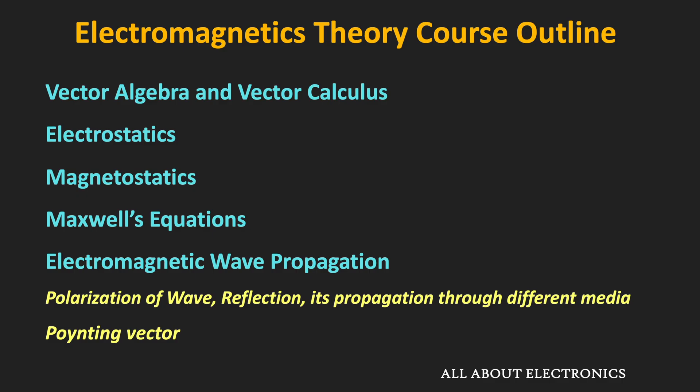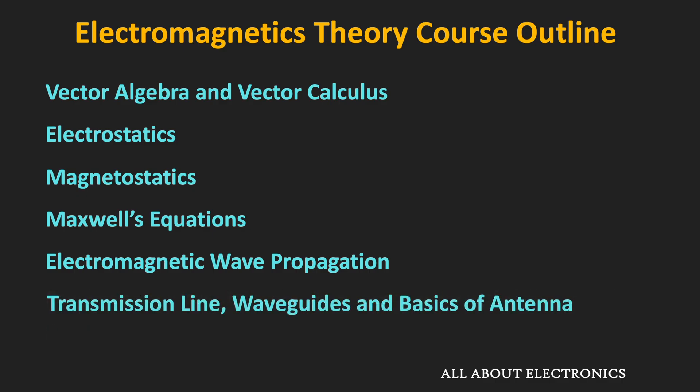After that, we will see how electromagnetic waves can be guided using transmission lines and waveguides. Through that, we will understand how the actual electromagnetic signal is guided using coaxial cables and fiber optic cables in the real world. Then we will cover the basics of antennas and understand how electromagnetic waves are radiated, which will be useful in understanding how wireless systems, radar, and satellite communication work.